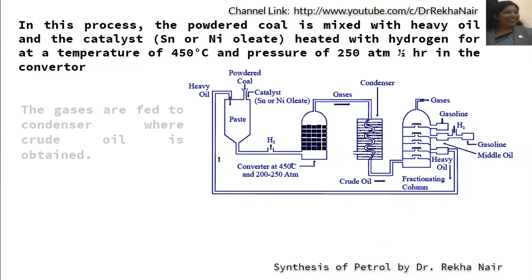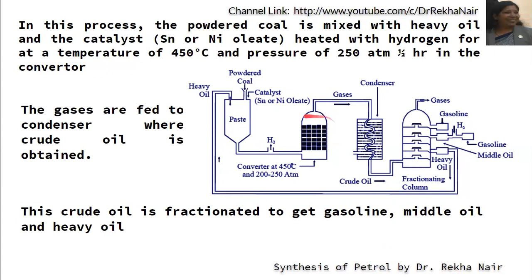After the reaction is complete, the products are sent into the condenser or cooler, and then into the fractionating column where different products are obtained. The uncondensed gases are removed, and the main product is gasoline. The middle oil fraction, which has lesser hydrogen content, is hydrogenated to obtain more gasoline. The heavy oil fraction is sent back into the first container to be used for making paste for the next process.